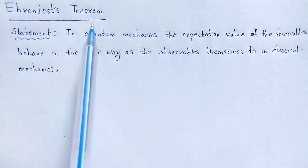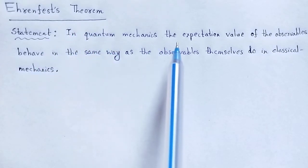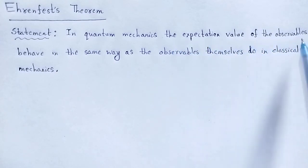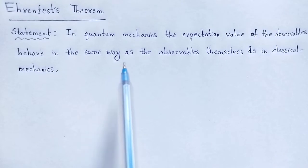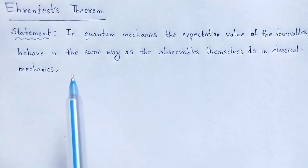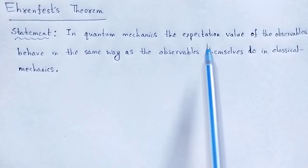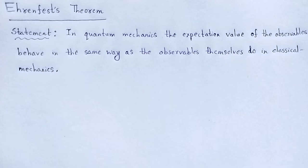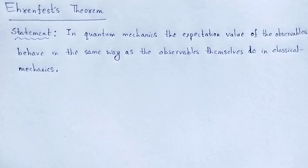What is Ehrenfest's theorem? In quantum mechanics, the expectation value of the observables behave in the same way as the observables themselves do in classical mechanics. This is because the motion of a wave packet should agree with the motion of the corresponding classical particles. That is why the observables in quantum mechanics play the same role that they play in classical mechanics.